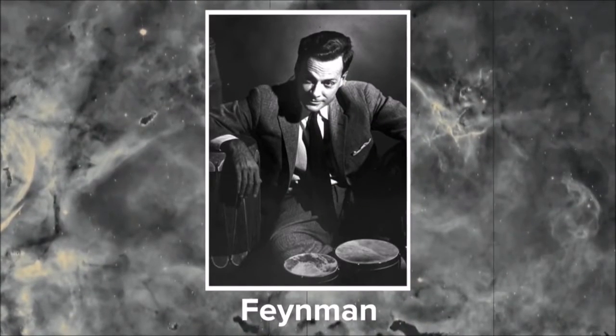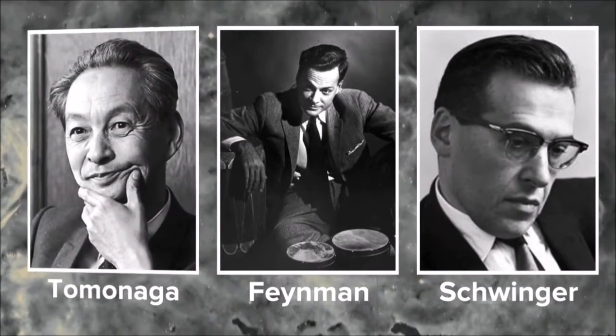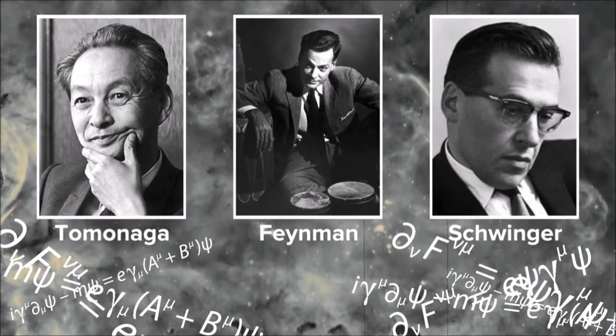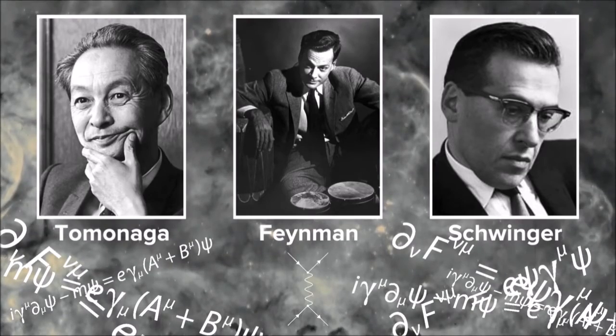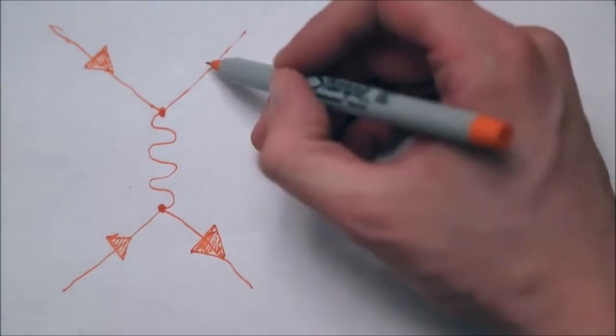Now, Feynman can't take all the credit. He shared his Nobel Prize with Julian Schwinger and Sinatiro Tomonaga. But those two guys were all about really intense equations. Feynman's real genius was the way in which he made the whole process intuitive. He made it so that anyone who can doodle can at least start the process of calculating what happens inside a high-energy particle collision.